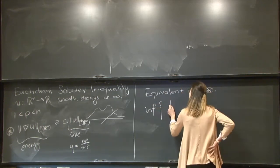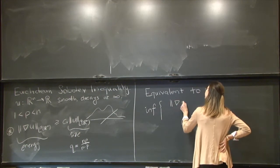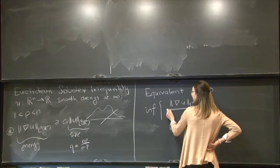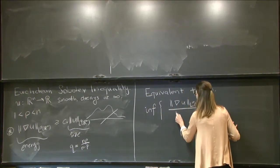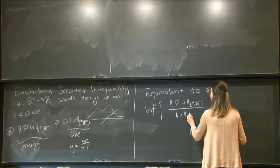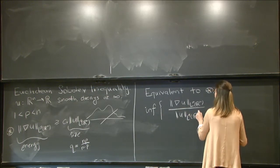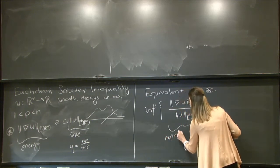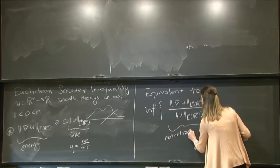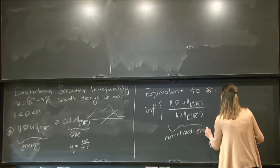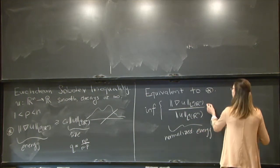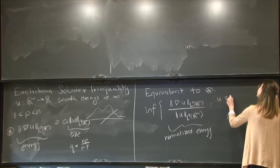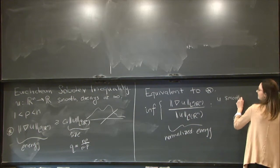We can view this as taking a minimization problem. So I'll take the infimum, or after the fact we'll actually be able to say this is a minimum, of the quantity which is just this energy, the gradient of u in LP divided by the size of the function, this norm in Lq of R^n. So here we should view this as just some normalized energy.